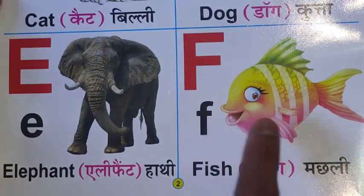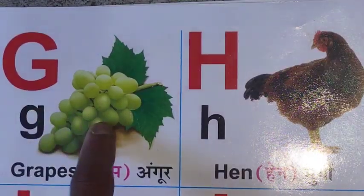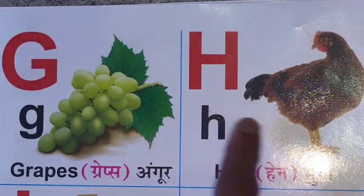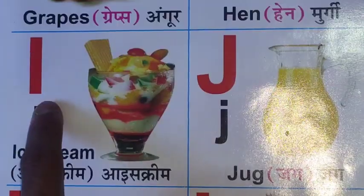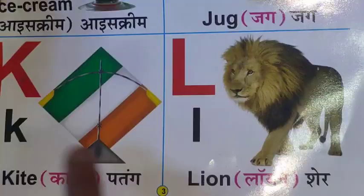F for Fish, G for Grapes, H for Hen, I for Ice Cream, J for Jug.